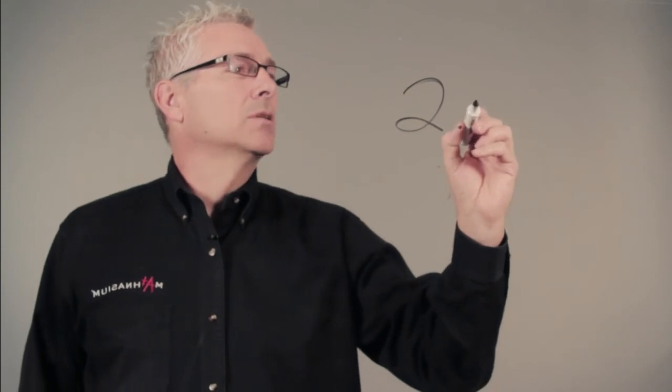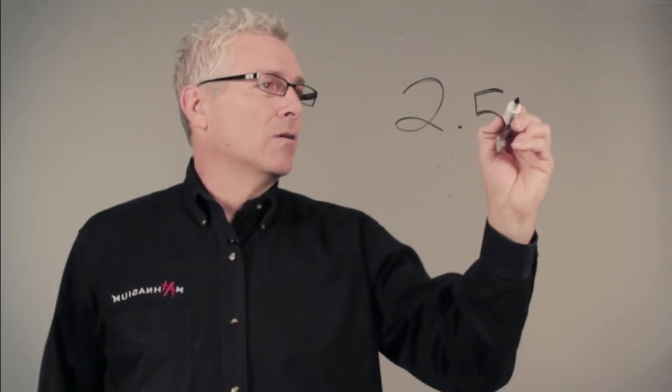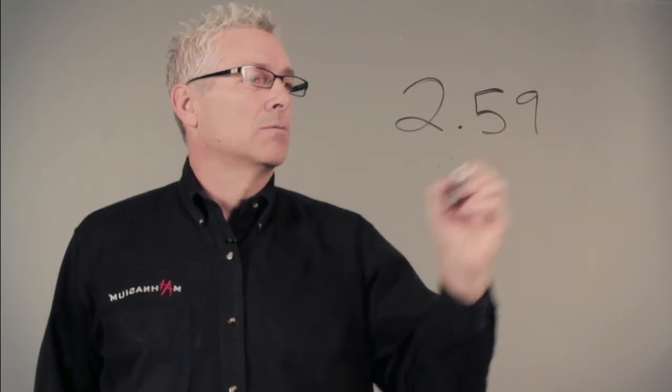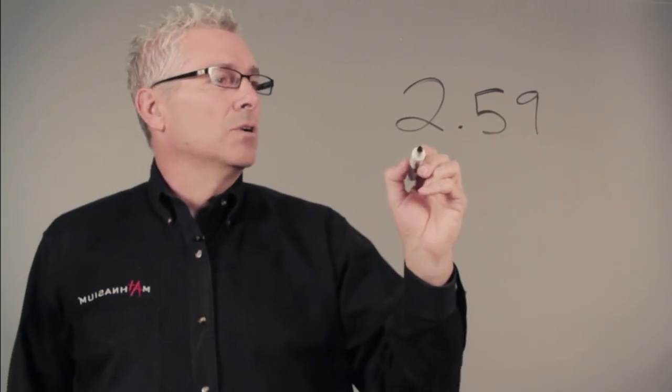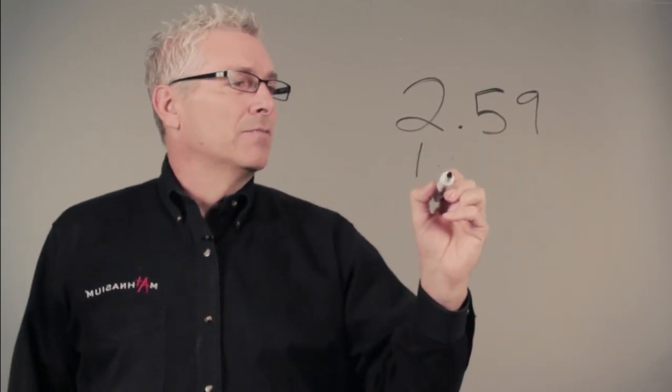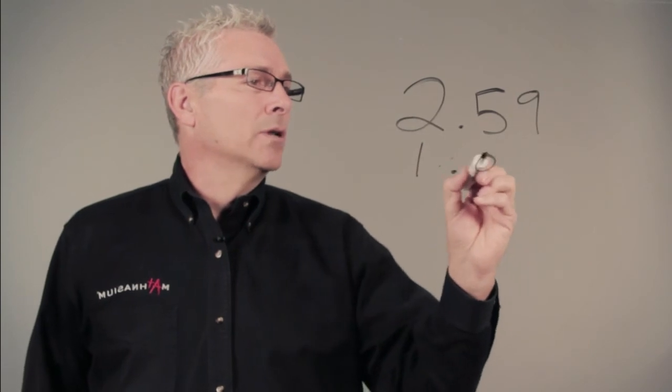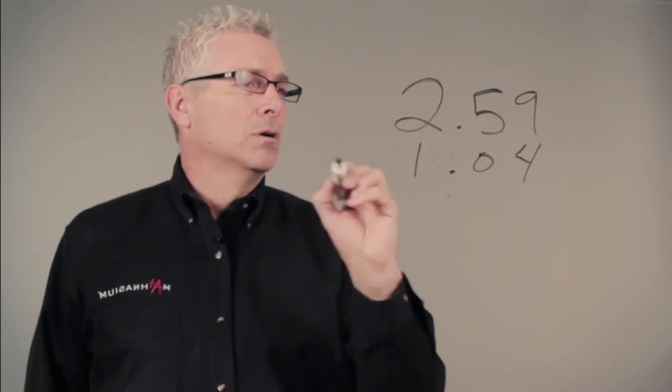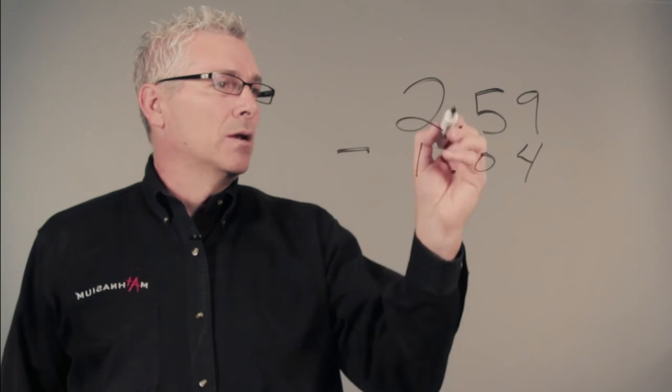We keep our ones on top of our ones. We keep our decimals on top of our decimals and we keep our tenths and hundredths on top of each other. If we're going to subtract 2.59 minus 1.04, we line up our decimals.